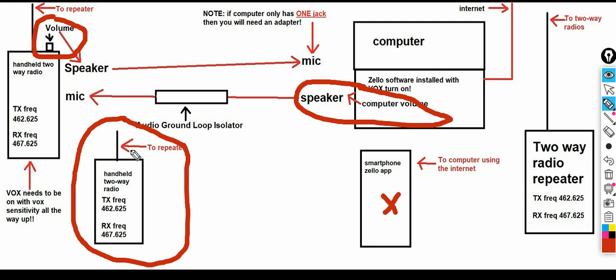The volume is where people get confused, and it's easy to be confused. Whether you're on the two-way radio or using the Zello app on a smartphone, the volume control is what feeds the microphone in. The arrows in my drawing represent the speaker feeding the microphone — keep that in mind.